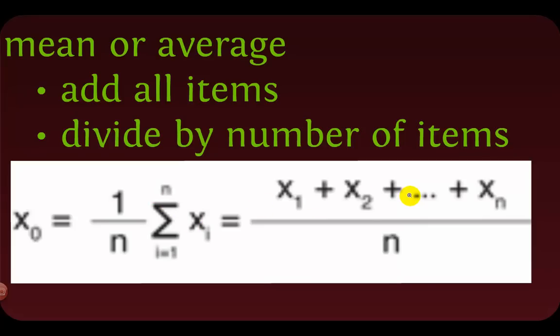We've always called it the average, and now we're being told to call it the mean. The reason is that when we say 'average,' sometimes we mean mean, sometimes we mean median, and sometimes we mean mode. So 'average' is ambiguous in statistics, and we try to avoid that term in statistical discussion.